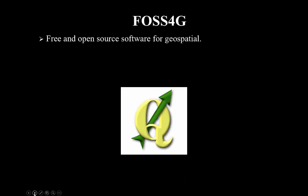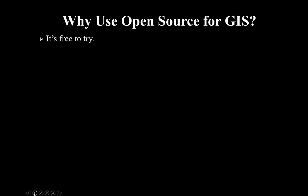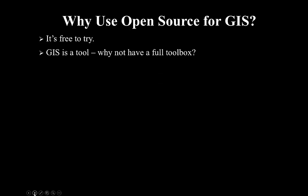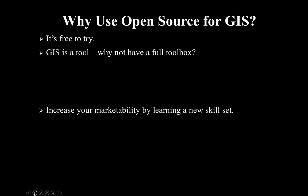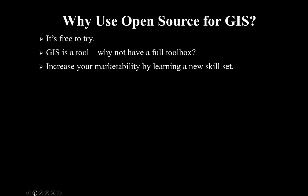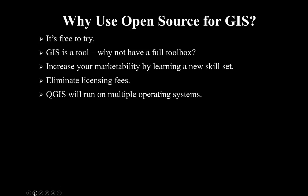Let's talk about FOSS4G — an acronym that stands for free and open source software for geospatial. So why use open source for GIS? First of all, it's free to try. GIS is essentially a tool, so why not have a full toolbox? You can increase your marketability by learning a new skill set, eliminate licensing fees, and QGIS will run on multiple operating systems — including Apple — which is attractive.